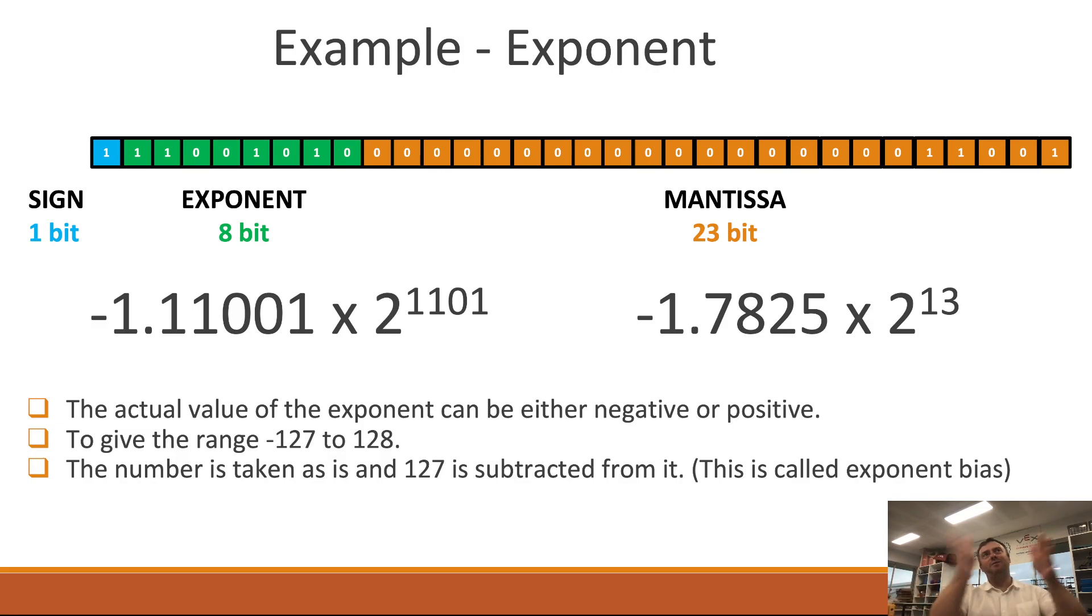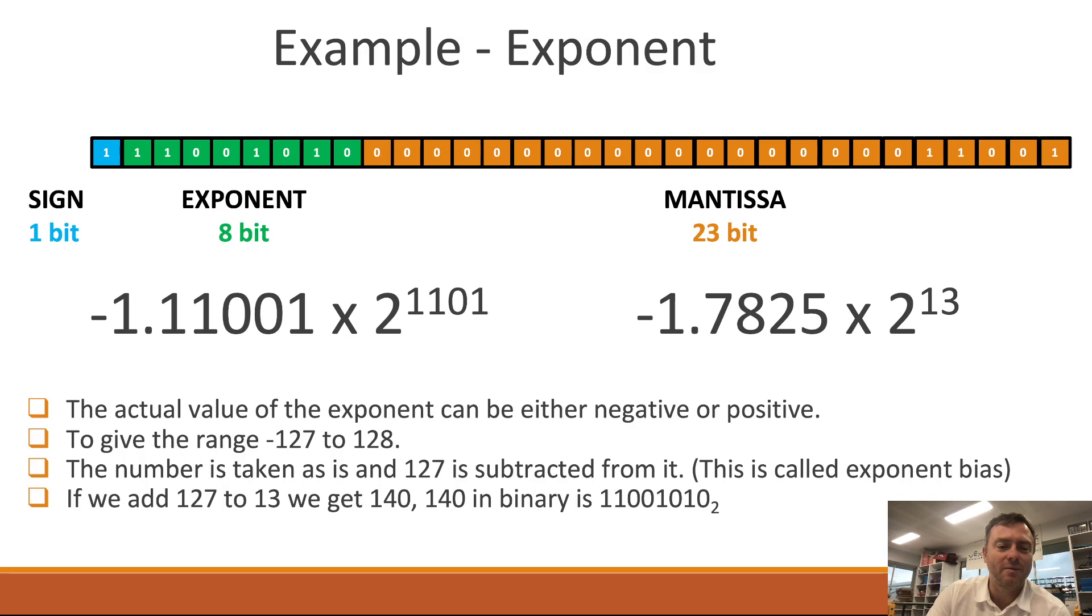And basically what happens is 127 is subtracted from that number as part of the algorithm. Because if you just have that number you would only have the numbers from 0 up to 255 which isn't going to give you all the options because it's only going to give you positive numbers. So part of the algorithm that the nerds back in 1984 worked out is by subtracting 127 from that it shifts it all the way down but then allows you to store negative numbers without having to store a negative symbol which is kind of cool. So if we add 127 to 13 we get 140 which is in the binary form of that.